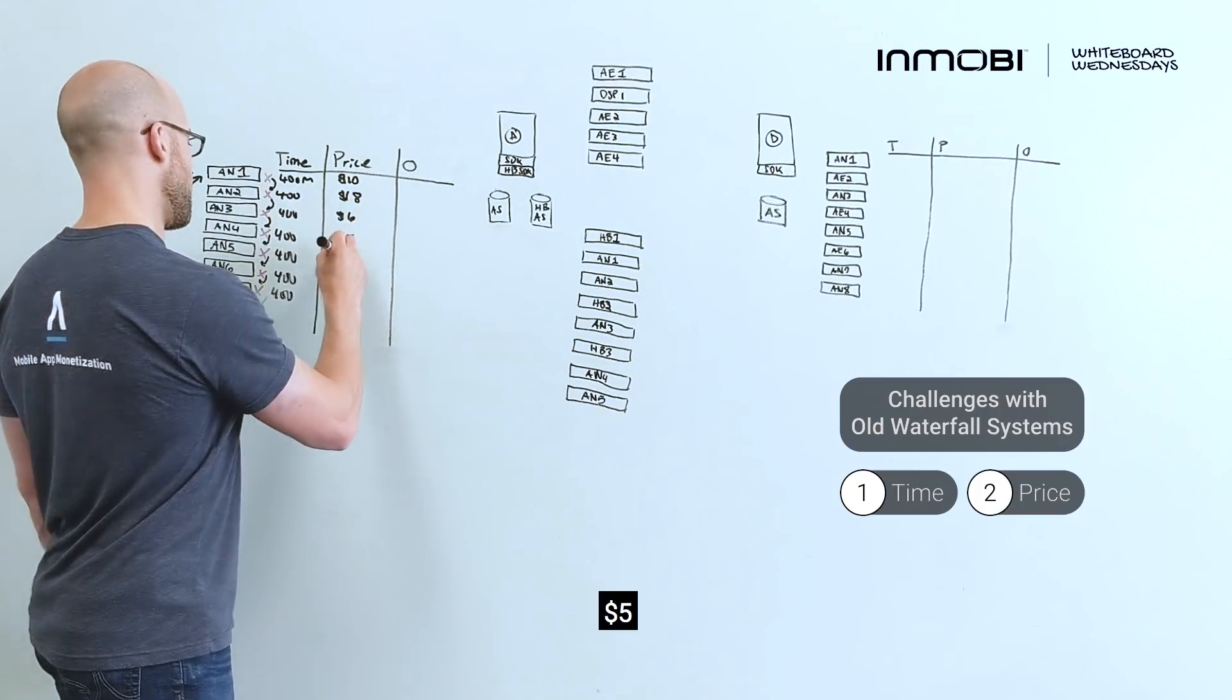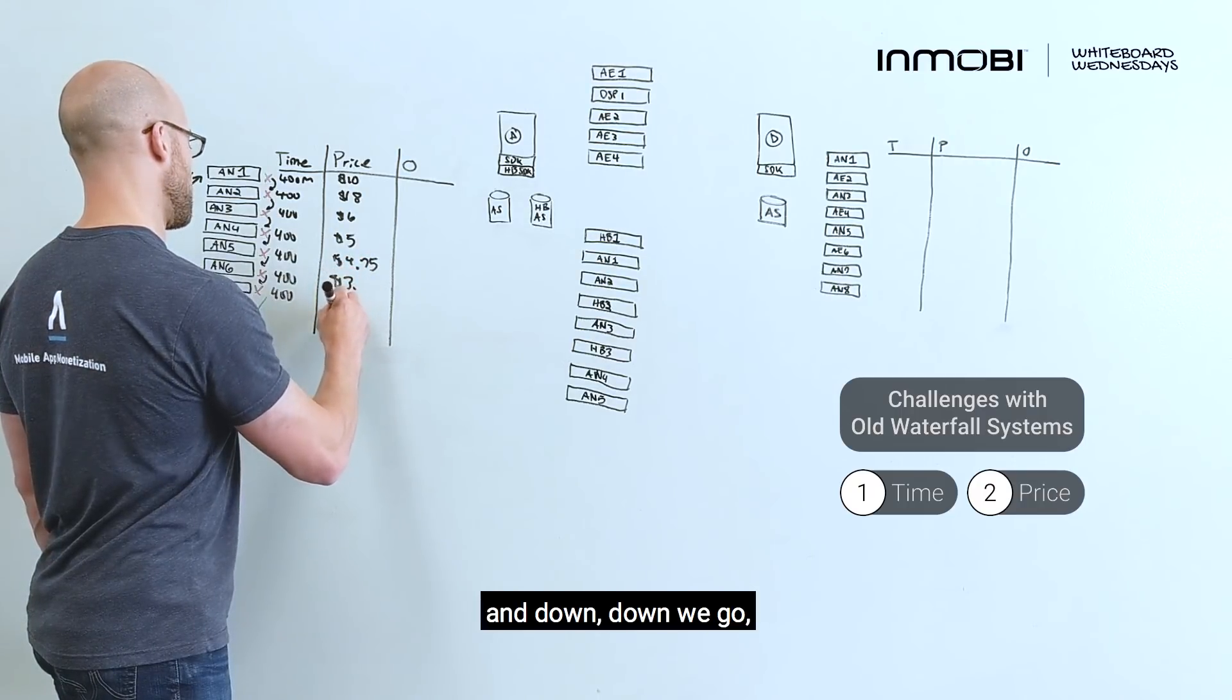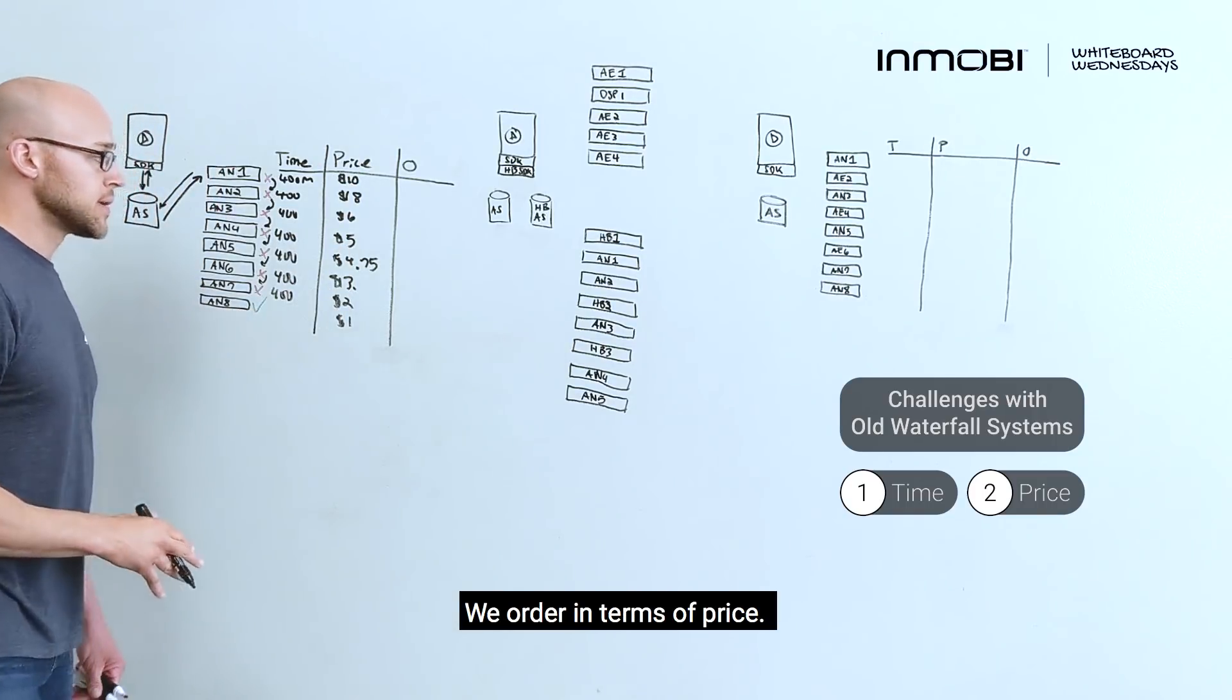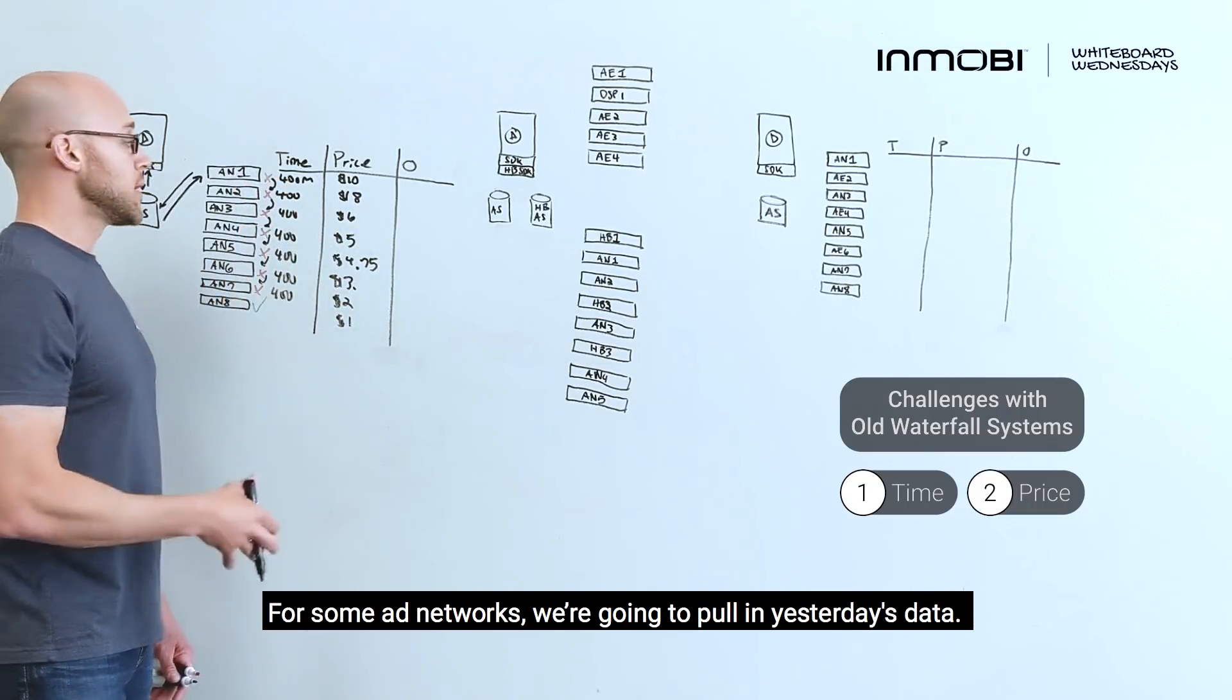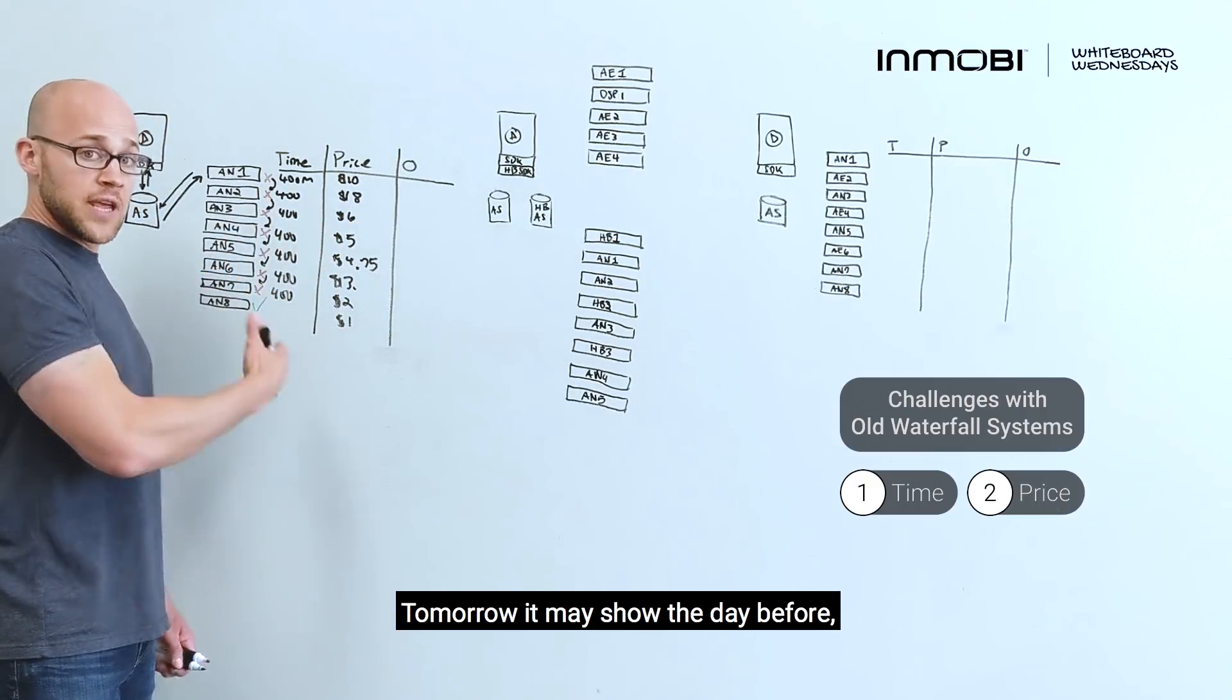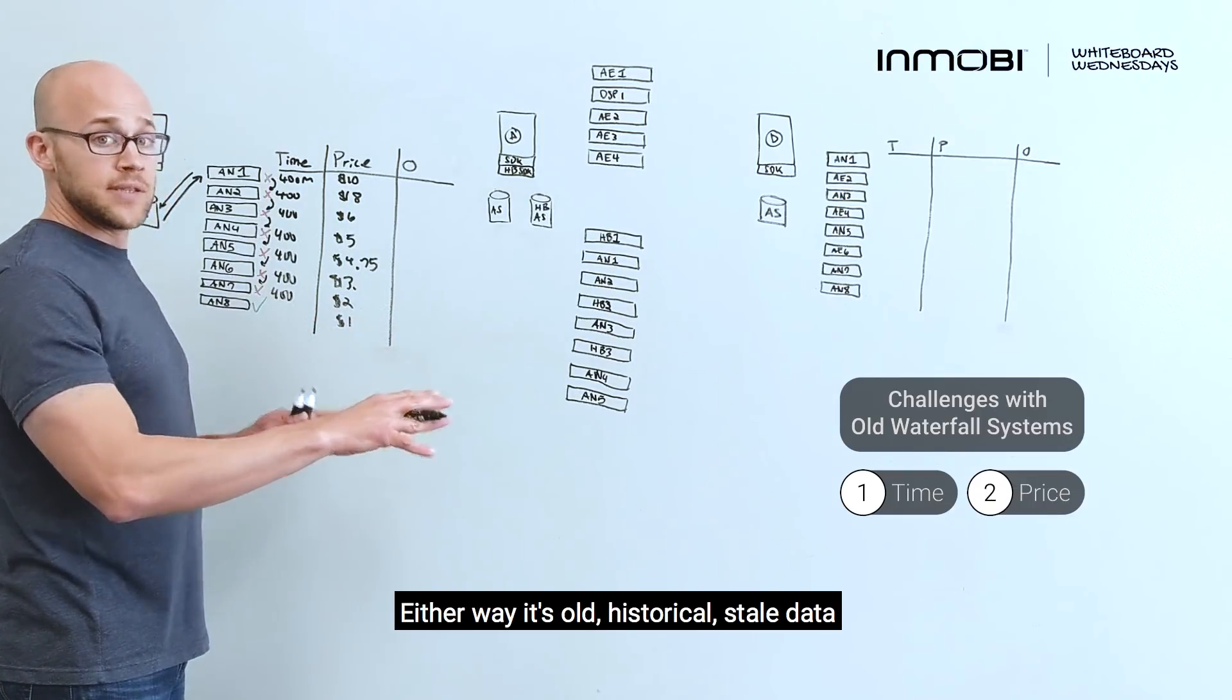And down and down we go. The bottom player is paying me the least. We order in terms of price. For some ad networks, it's going to be just a stable CPM. For some ad networks, it's going to pull in yesterday's data. And so for one day, they may pay me $10. Tomorrow, it may show the day before, and it's going to show me $9. Either way, it's old, historical, stale data.